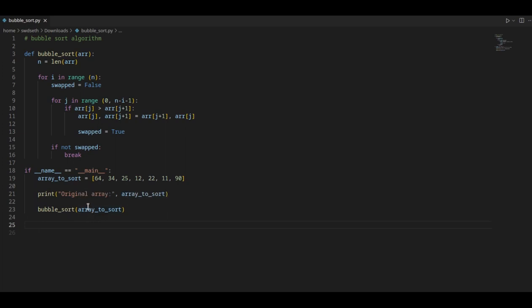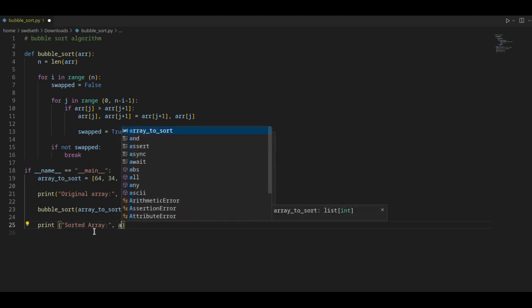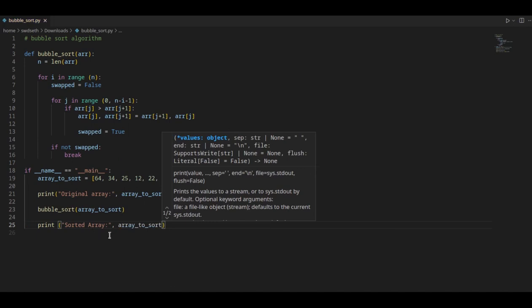So now we can print the sorted array as the same one as of the original, so this will be array to sort. And that is the complete code, now we need to run the code, now to check whether we have done it correctly.